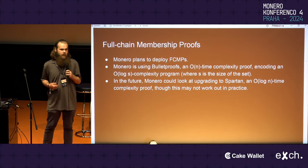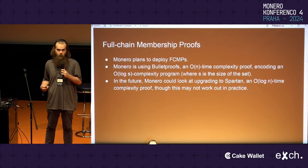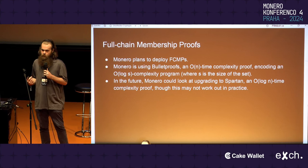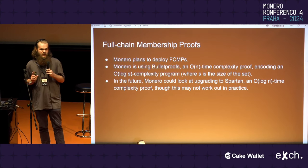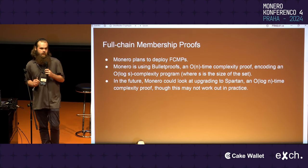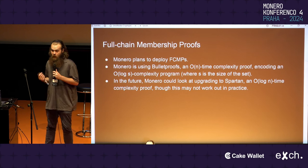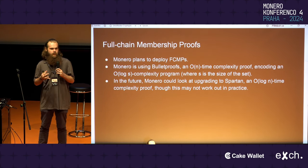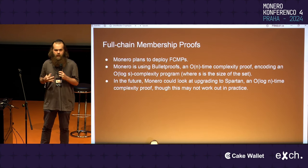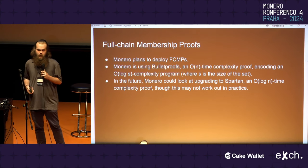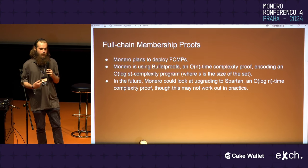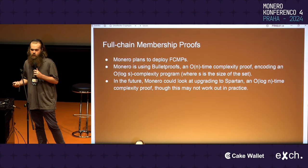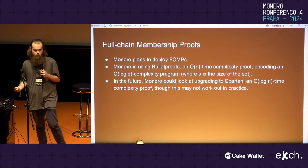In the future, we could look at upgrading to different proofs that are O(sqrt(N)) over elliptic curves, such as Spartan. The great thing about Spartan is that not only is it small in space, but it is O(sqrt(N)) — so small in time. The bad thing is that Spartan takes longer to do each individual step, and because each unit may be so much more expensive, it may still not work out in practice.